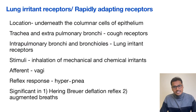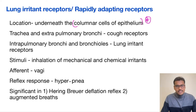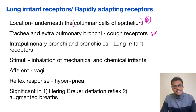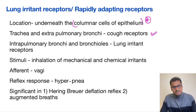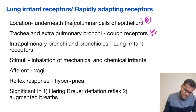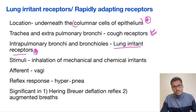Now coming to the lung irritant receptors, also called rapidly adapting receptors. They are located under the columnar cells of the epithelium in the trachea and extra-pulmonary bronchi, where they are called cough receptors. In the intra-pulmonary bronchi and lower bronchioles, the same receptors are named lung irritant receptors.